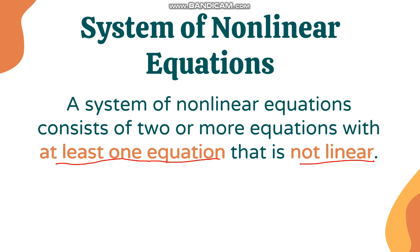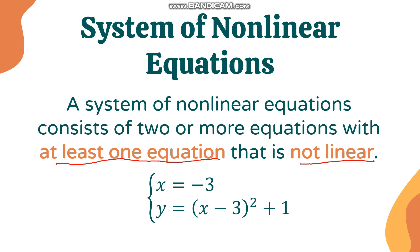The non-linear equation can be a quadratic equation or an equation of a conic section. For example, we have a system of x equals negative 3 and y equals the square of (x minus 3) plus 1. The first equation, x equals negative 3, is a linear equation because its degree is 1, whereas the second equation is not linear because when simplified its degree equals 2.